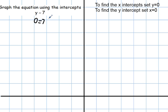The y-intercept is found by setting x equal to 0. Well, the y-intercept is at 7, because y equals 7. So 1, 2, 3, 4, 5, 6, 7 — and then this is a horizontal line.